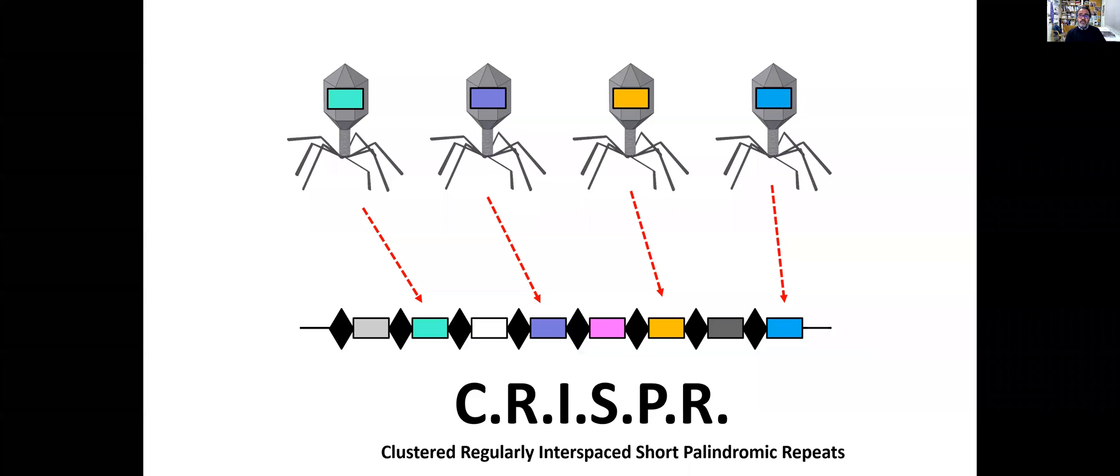Now we know, thanks to Francis Mojica's research, that what is in between these repetitions are pieces of viral genomes, and those bacteria that are carrying these pieces are immune to infection for these particular viruses. This is a true immune defense system of a genetic basis.